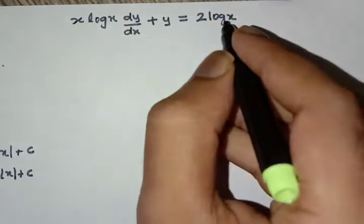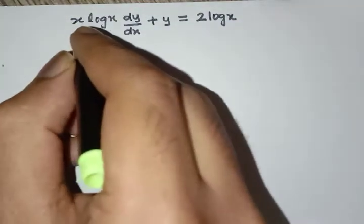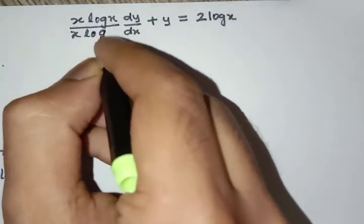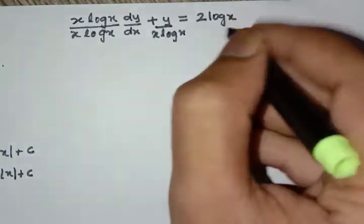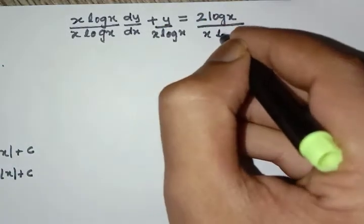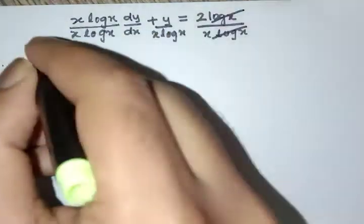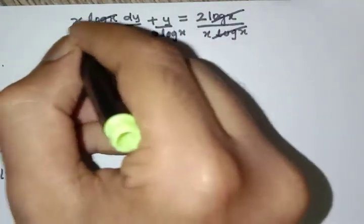So we'll divide both sides by x log x. Here we can cancel these terms.